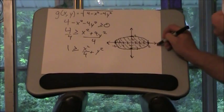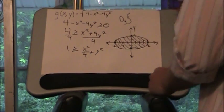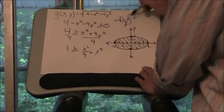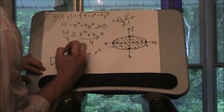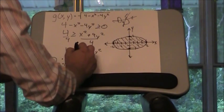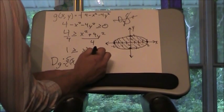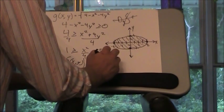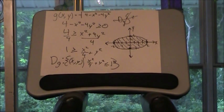And this is my x, and this is my y. So the domain of g is x. I'm not going to have enough room up there. I'll write it down here. The domain of g is xy such that x squared over 4 plus y squared is less than or equal to 1.